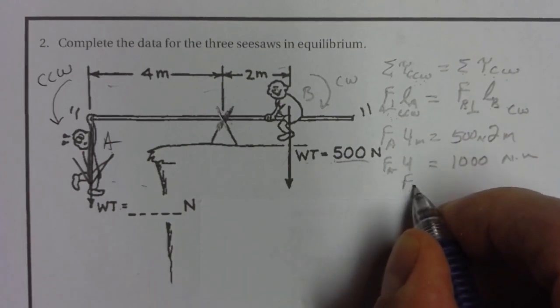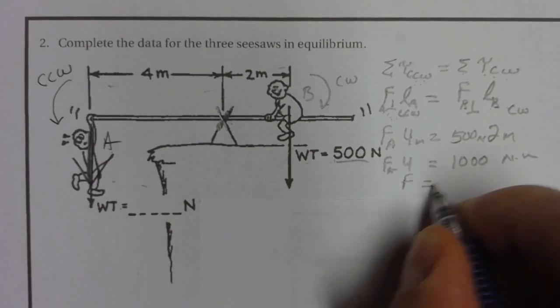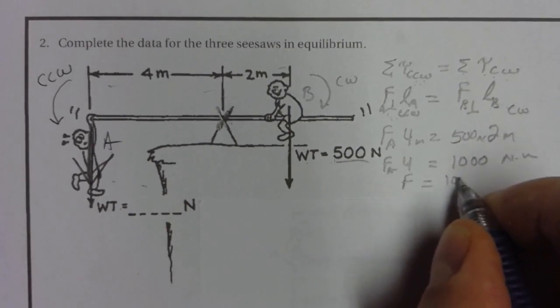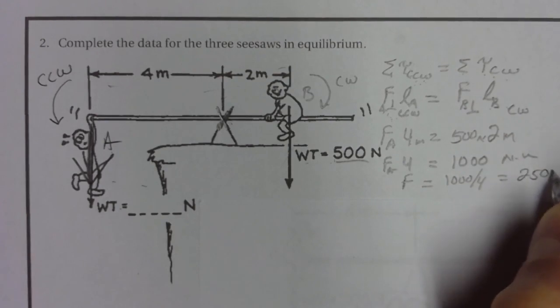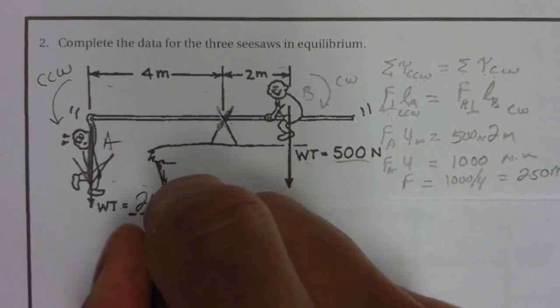On the left we've got FA times four, so we divide by four. The force that the guy on the left is applying is 1000 divided by four, which is 250 newtons.